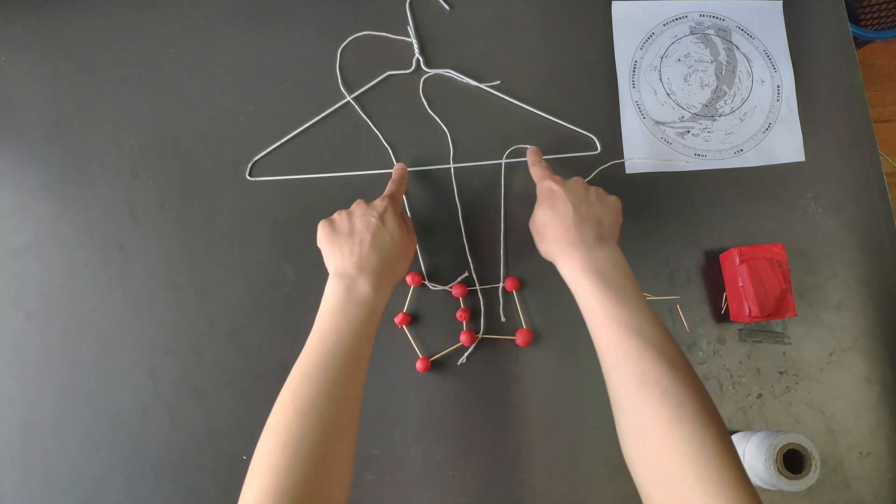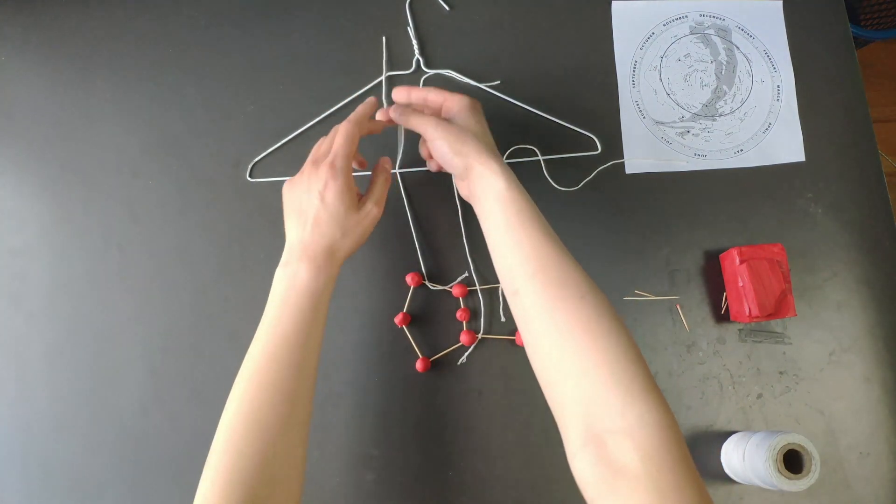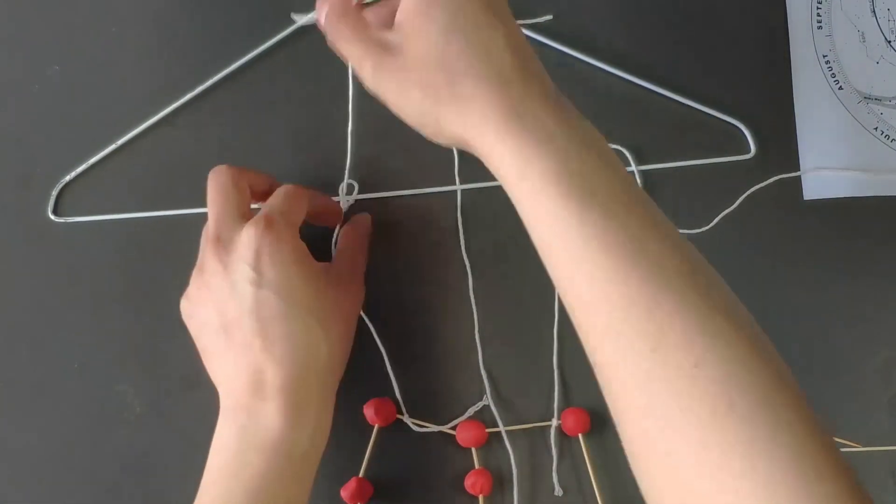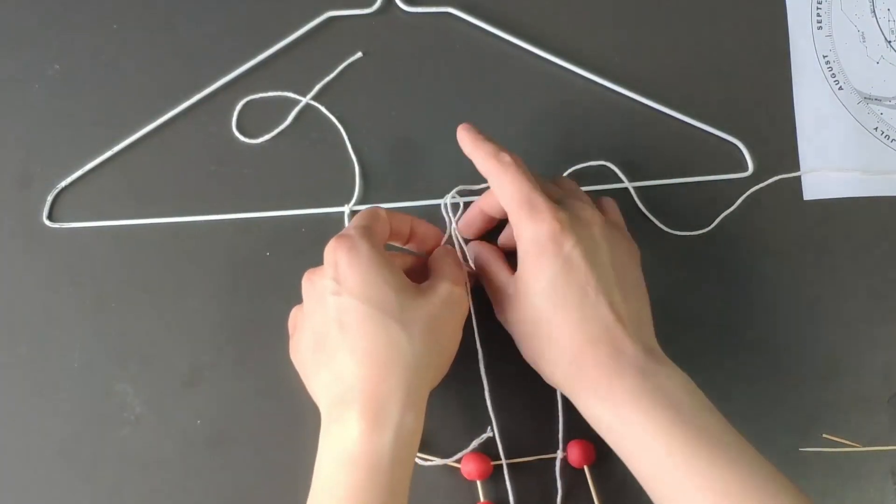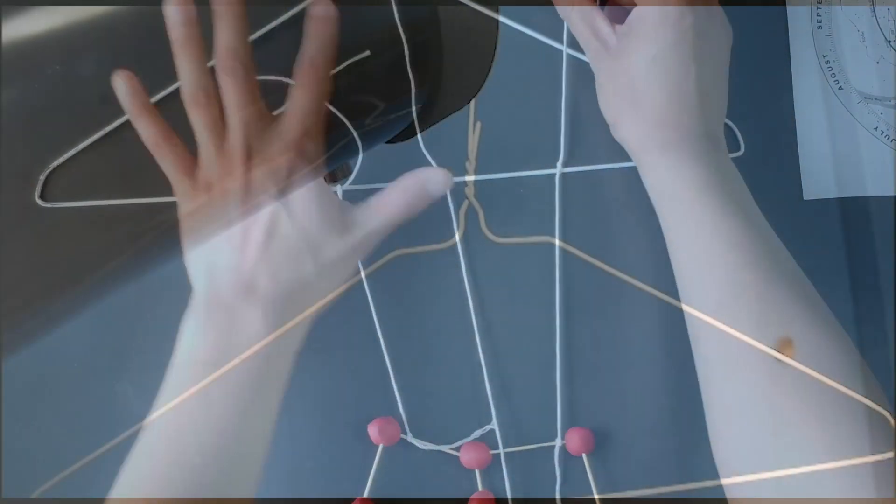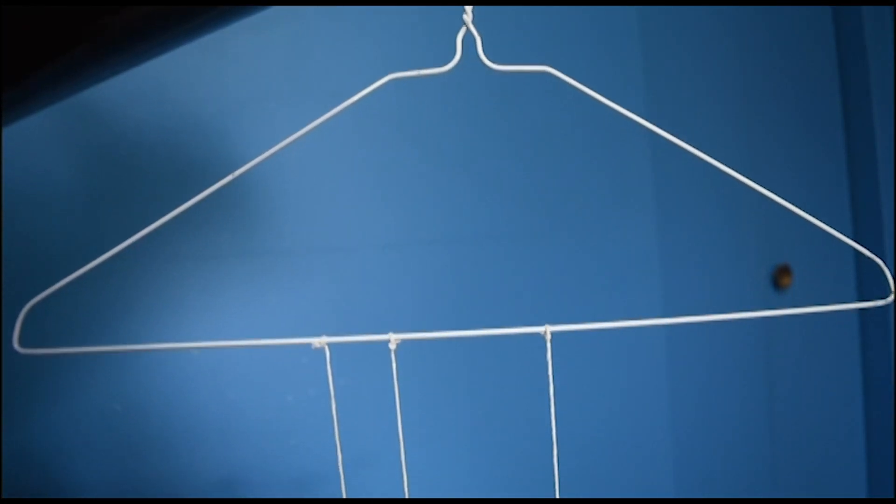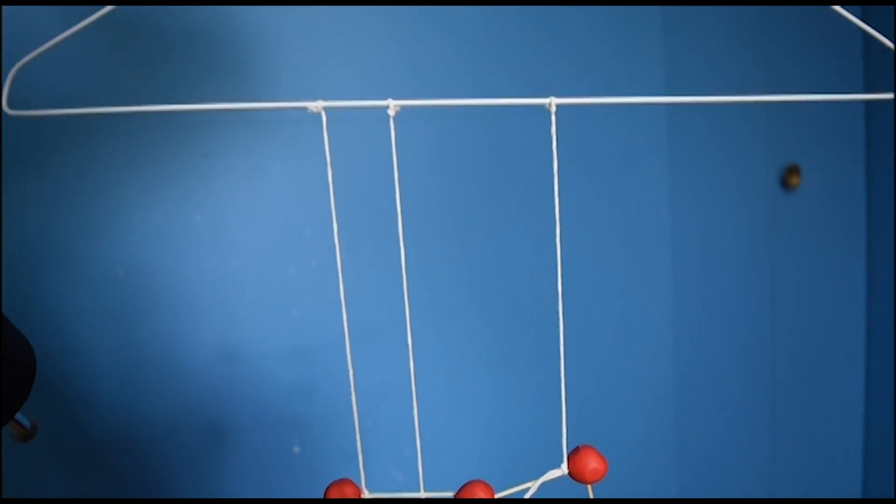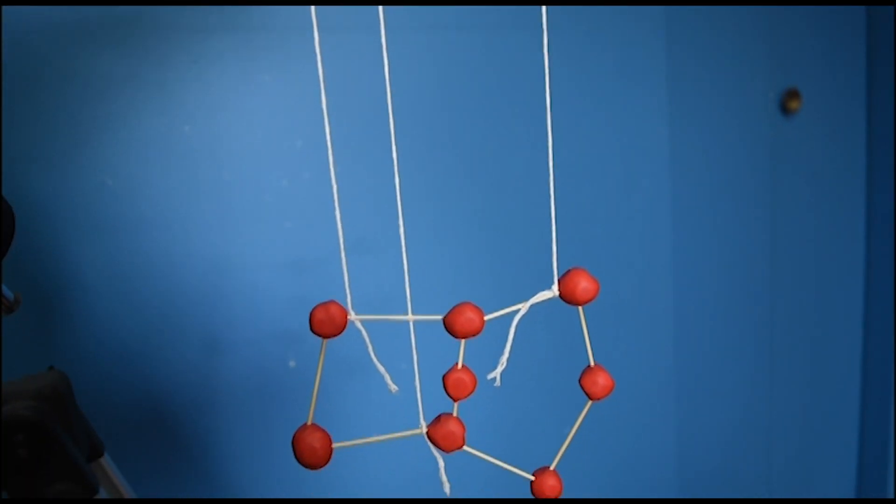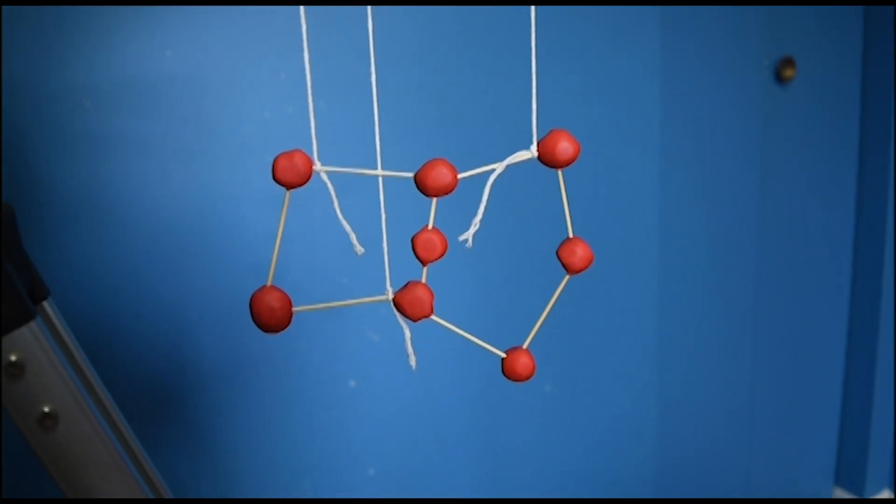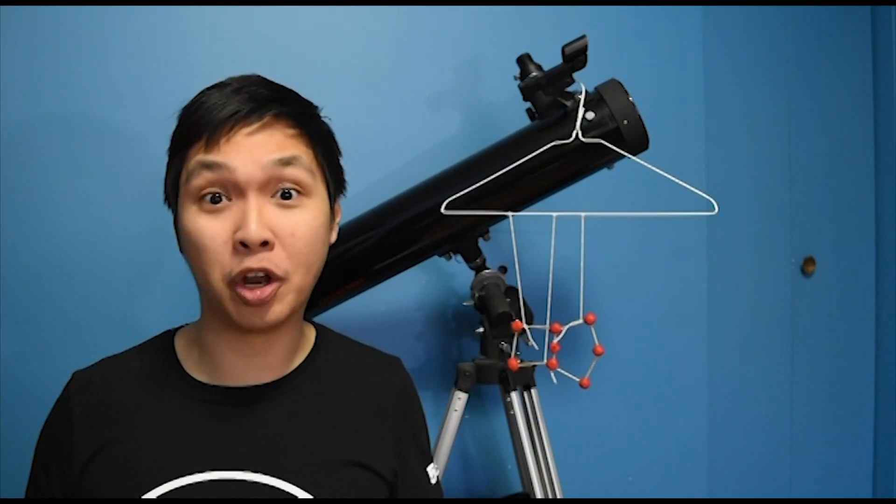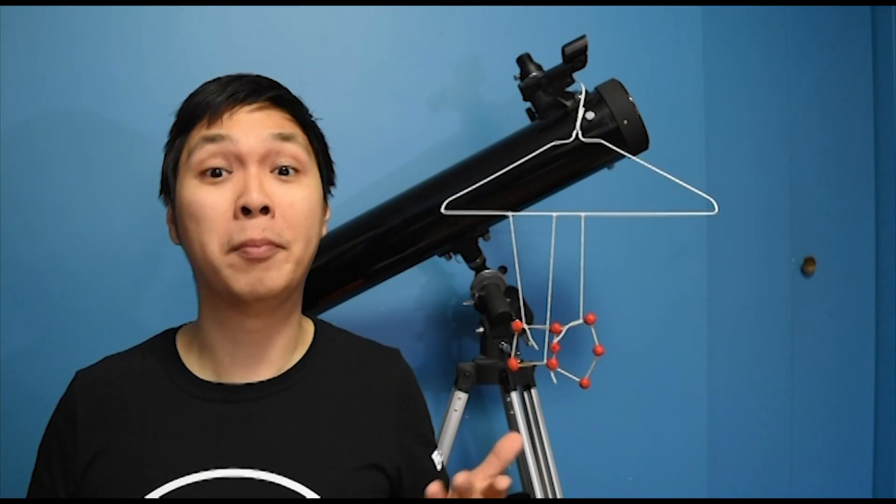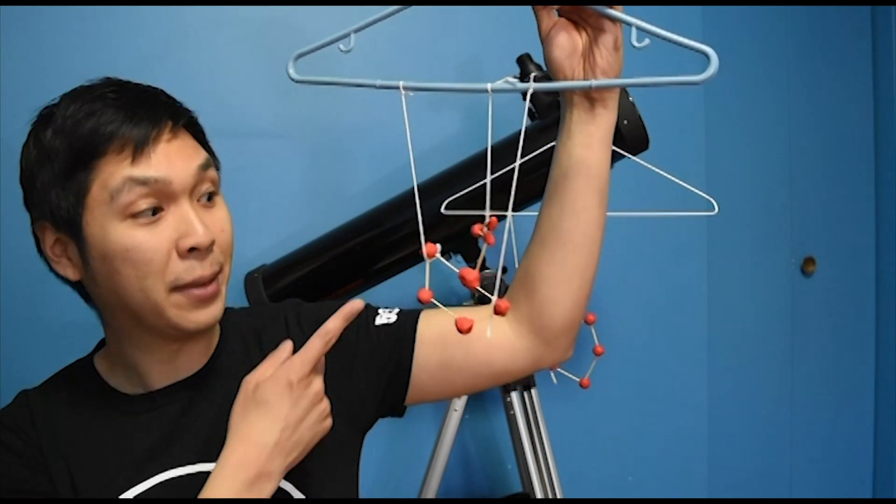Now time to tie them down to the hanger. And there is Orion. Now it's your turn to try it at home. You can either make a known constellation or make up your own. Just like what I did, I made a little boat. Bye!